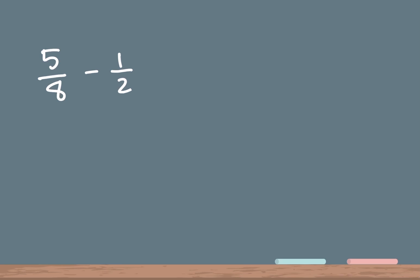I'm gonna use the space on the bottom to write it out. The first bottom number is 8. So 8 times 1 is 8, 8 times 2 is 16, 8 times 3 is 24, and 8 times 4 is 32. I'm just gonna do four numbers right now, but if you don't have a common denominator you can keep going until you find one.